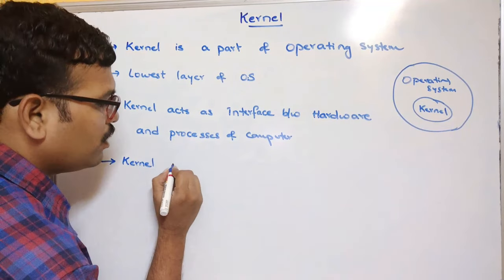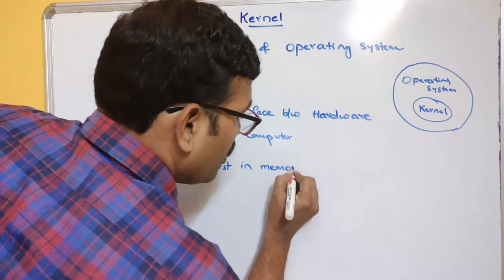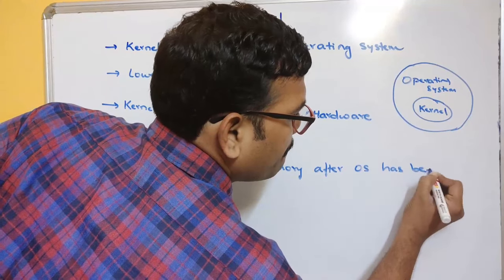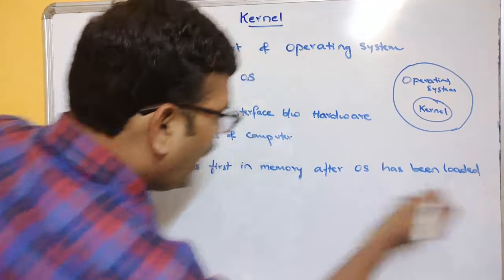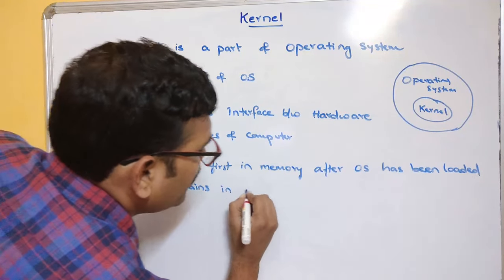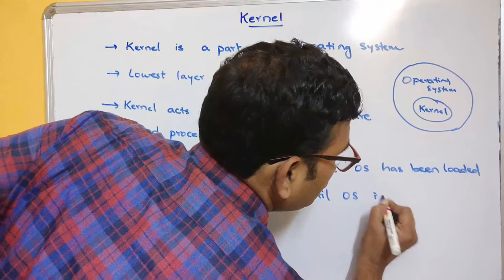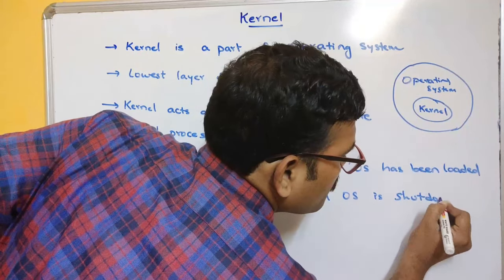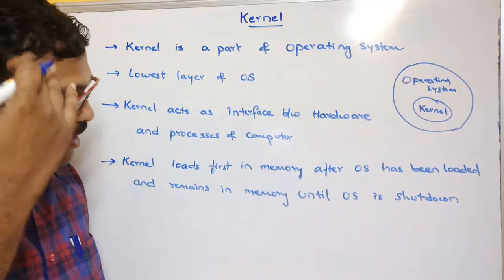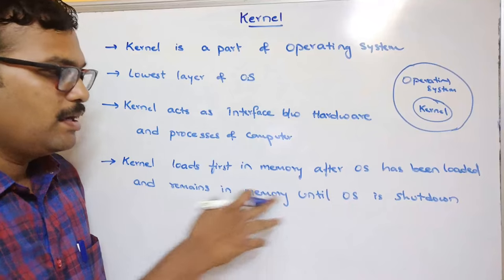The kernel loads first in memory after the OS has been loaded, and it remains in memory until the operating system is shut down. So once you switch on the system, the operating system is loaded and immediately the kernel loads into memory, where it resides until the system gets shut down.